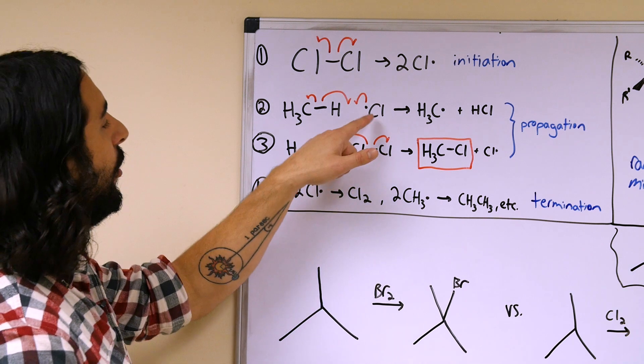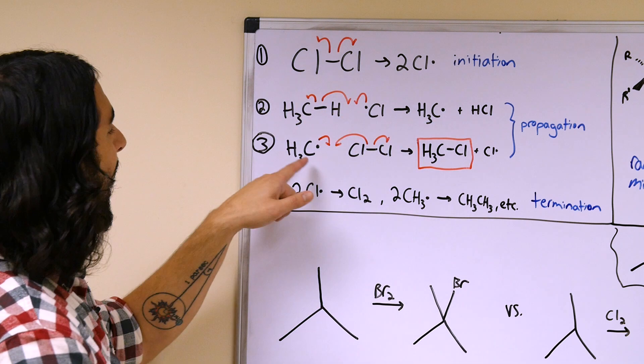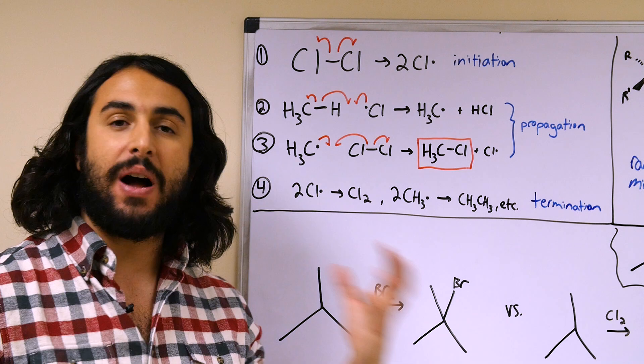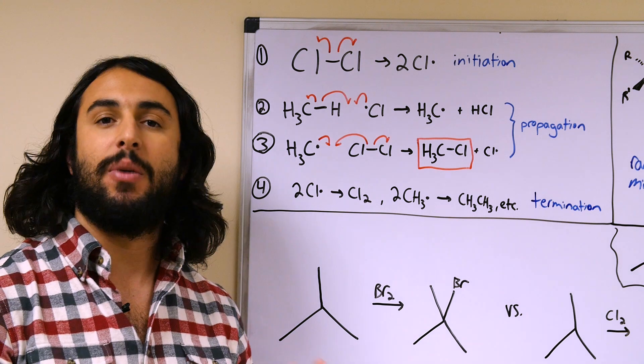The chlorine radical is going to propagate some alkyl radical, and then the alkyl radical will want to bind to anything it can find. If it runs into a chlorine molecule, which is probably much more prevalent in the system than chlorine radicals being very unstable.